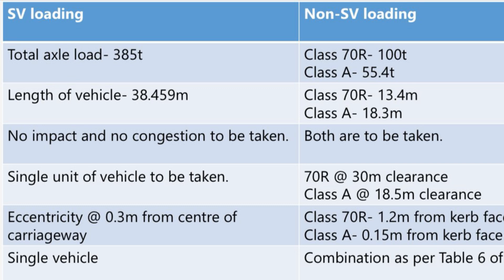2. Length of Vehicle. In SV loading, the vehicle length is 38.459 meters. However, in non-SV loading, two standard vehicle lengths are considered: Class 70R loading having a vehicle length of 13.4 meters, and Class A loading with a vehicle length of 18.3 meters.